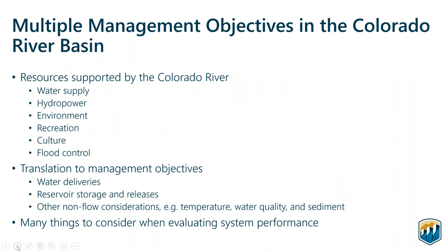As with all river basins, the Colorado River supports many resources: water supply, hydropower, environment, recreation, culture, and flood control. When we think about that in a planning context, that means we have multiple management objectives. We want to deliver water, store water, release water, and we have other non-flow considerations like temperature, water quality, and sediment. The point is that we have multiple objectives, many perspectives, and there's no one best way to operate the system. This is part of deep uncertainty when there are different objectives and multiple views.